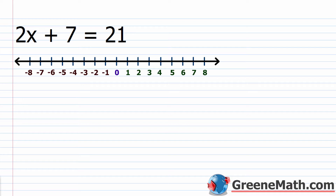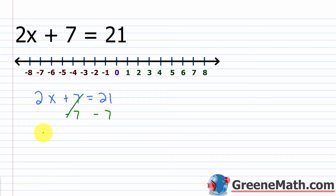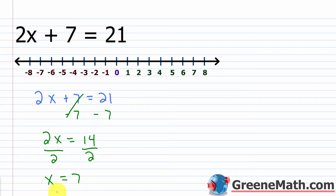Before we get into interval notation, let's start out with a typical equation to show you a few things. We have 2x plus 7 equals 21. We know how to solve this: subtract 7 from each side, giving us 2x equals 14, then divide both sides by 2 to get x equals 7. Normally we just write x equals 7, which is a perfectly acceptable way to notate your solution.